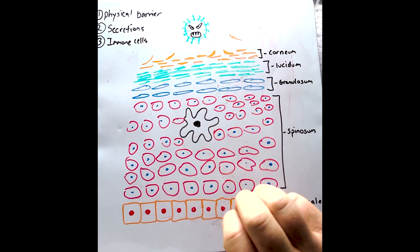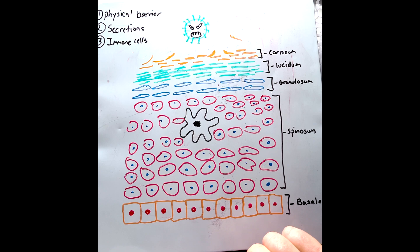Our skin can be divided into three layers: the epidermis, the dermis, and the hypodermis. For this video, we're going to focus on the epidermis.